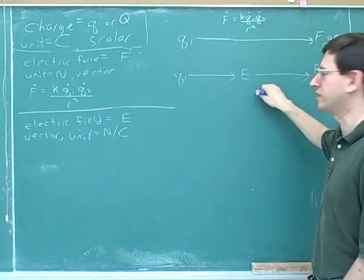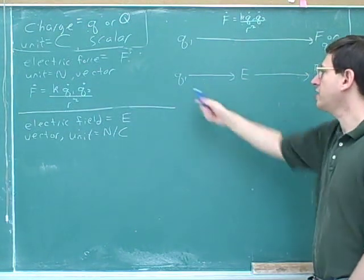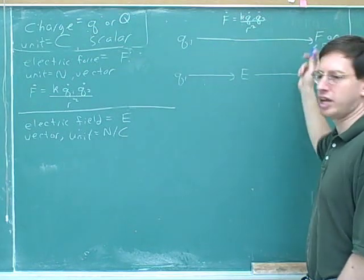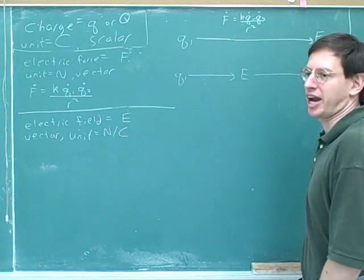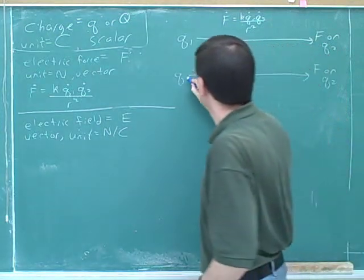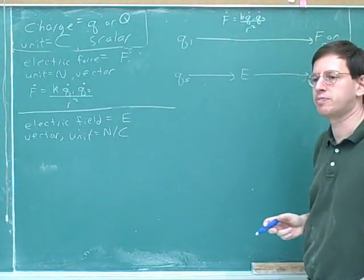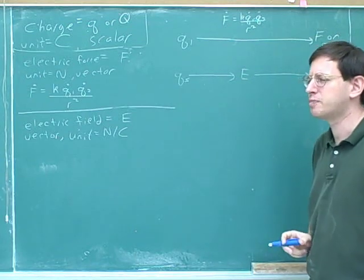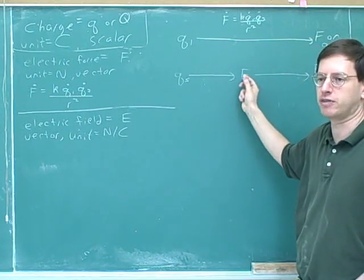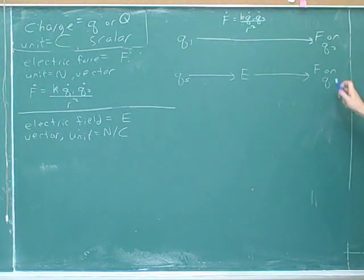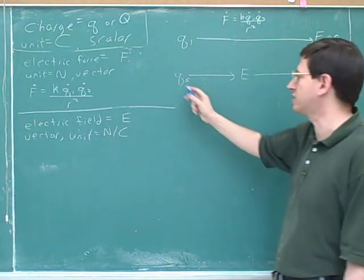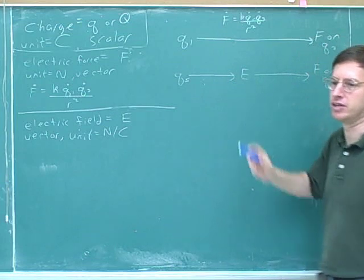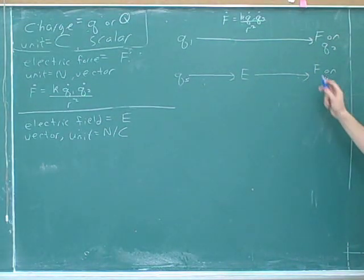Up here is the way we've been thinking about things so far, but now we're going to start thinking about a new approach. In this approach we change the names — we can call these whatever we want. The more useful names are: we call this the source charge, because it's the source of the electric field. And the other charge is called the test charge. The symbol for the test charge is Q-sub-zero, or Q-sub-naught. Q-sub-S is the source charge, creating the electric field; Q-sub-naught is the test charge, which is feeling the force.